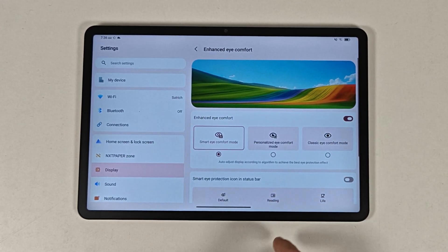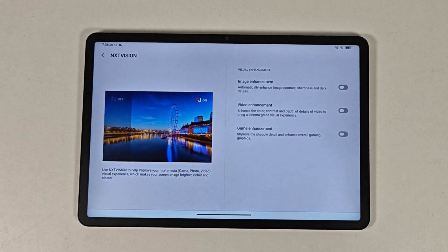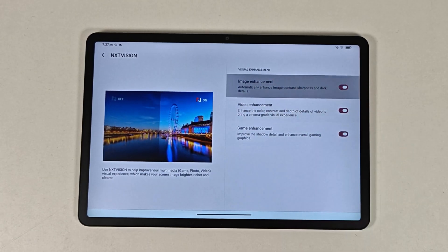Thankfully, NXT Paper 4.0 allows you to turn all that stuff off, giving you a purer display that appears to have no dithering on the normal color mode from what I can tell.